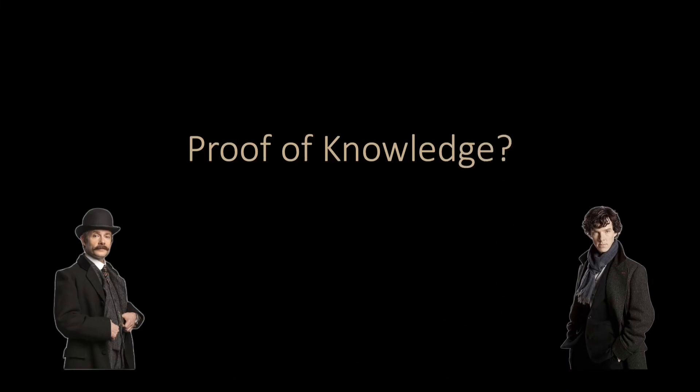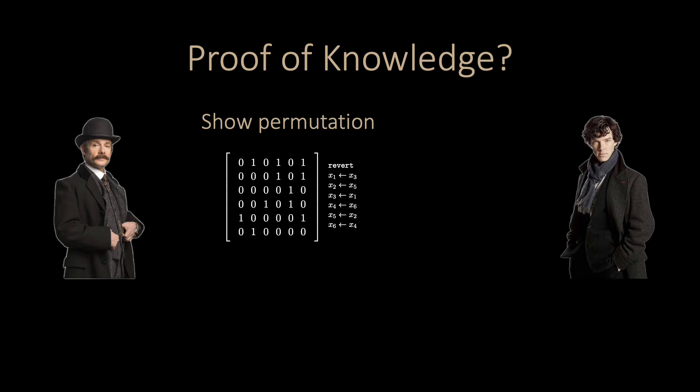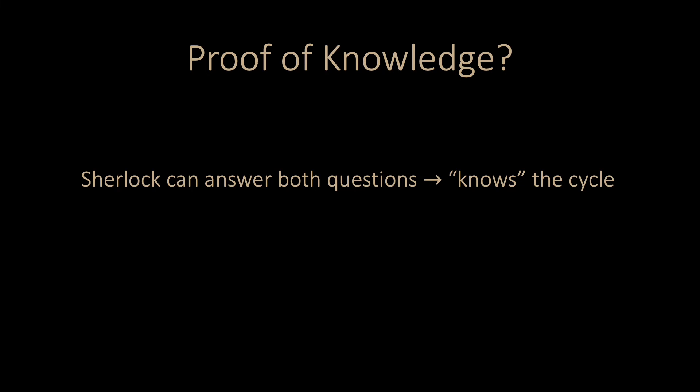But why should Watson be convinced that Sherlock knows the cycle? If Sherlock can answer both questions, he knows a Hamiltonian cycle in the graph, since he can simply revert the permutation and get the cycle in the original graph. So, if Sherlock can answer both questions, it follows that Sherlock knows the cycle.